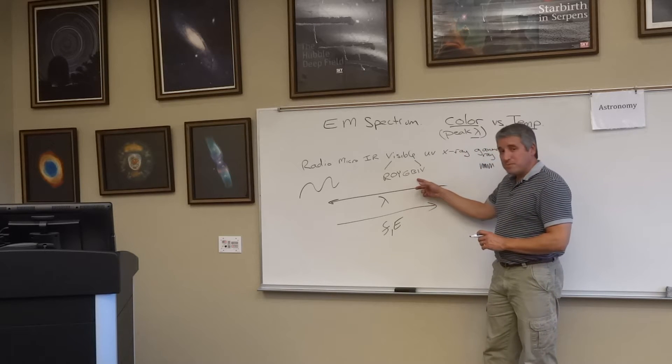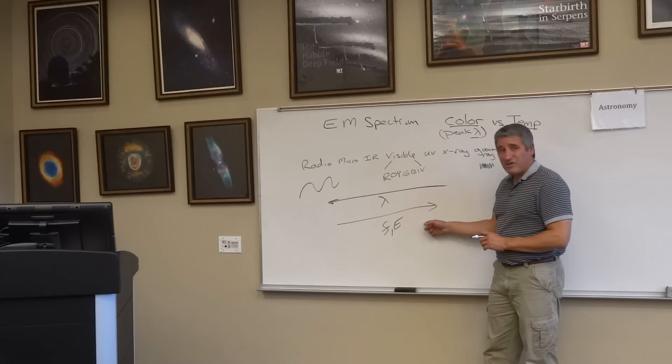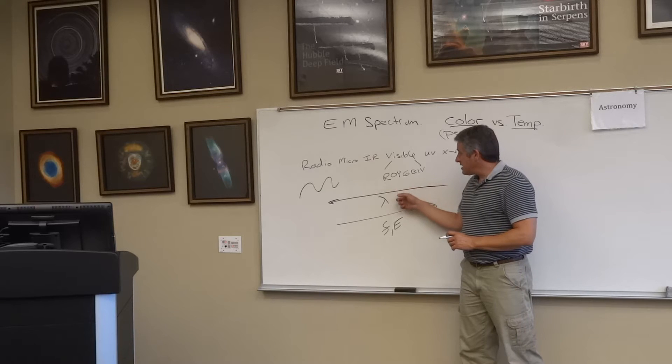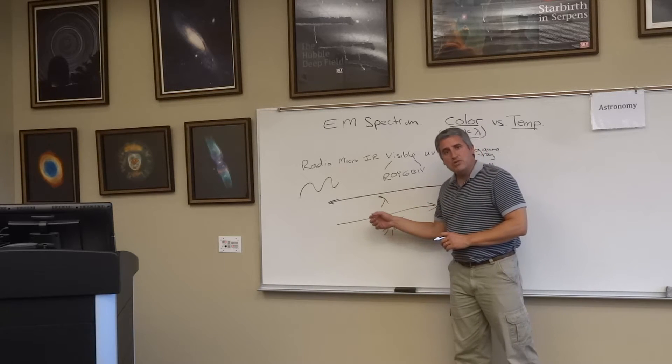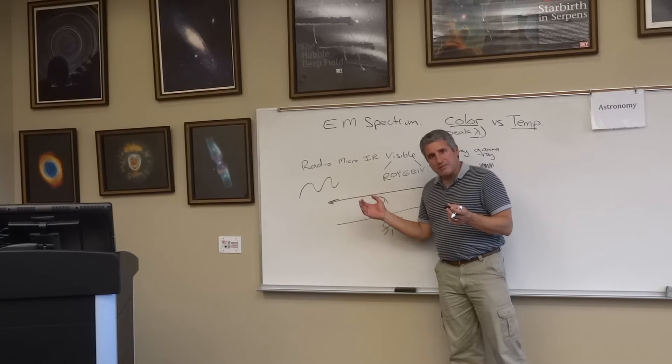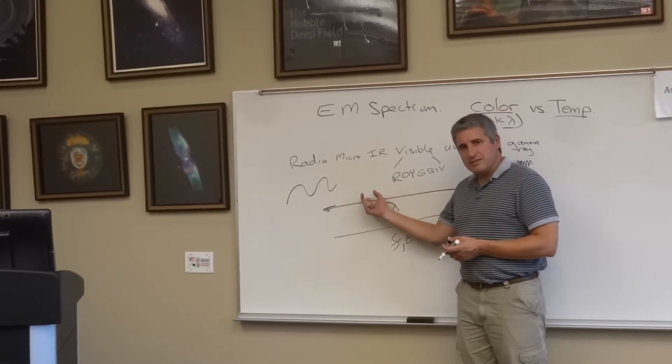So the hot fire is blue, it's producing higher energy light. Cooler is yellow, orange, red. Might you imagine there's even some infrared light coming off the fire on the edges? Absolutely.